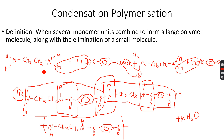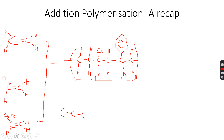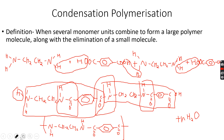In condensation polymerization there will always be one order, because it is that order which causes the condensation reaction. In addition polymerization, however, the order doesn't matter — ethene can combine with another ethene, vinyl chloride can combine with vinyl chloride or with ethene. In the end what we get are C-C bonds regardless. Styrene combining with ethene or with another styrene still gives C-C bonds. But in condensation polymerization the order is very important.